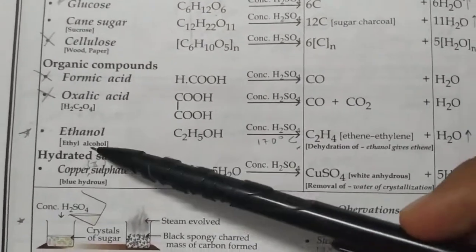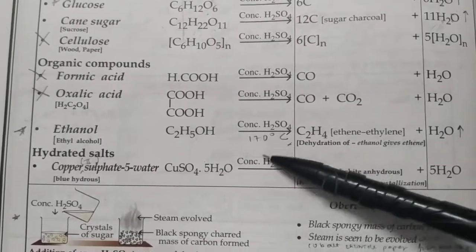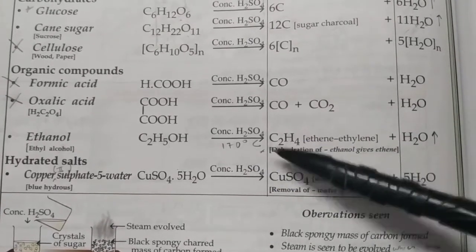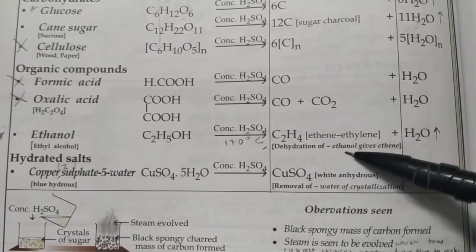One more reaction: when it reacts with ethanol, that's alcohol, at 170°C it forms ethene which is also called ethylene. This process is called dehydration of ethanol and we will study this again in organic chemistry.